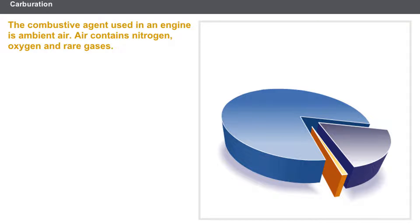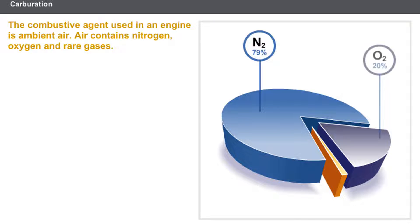Air consists of the following gases: 79% nitrogen and 20% oxygen. The remaining percentage comprises rare gases.